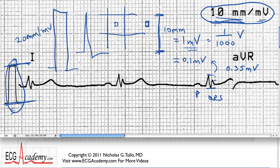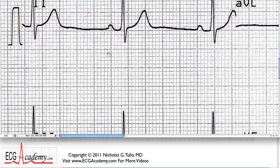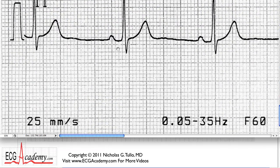That's how you can tell your standardization — by looking at the calibration pulse or the standard label. The other thing you need to know about is timing. If the paper is running at standard speed, the calibration pulse should be two small boxes wide. On the paper, somewhere at the bottom, there'll be something that says 25 millimeters per second. That tells us how fast the paper is running. So 25 millimeters equals 25 small boxes: 5, 10, 15, 20, 25.